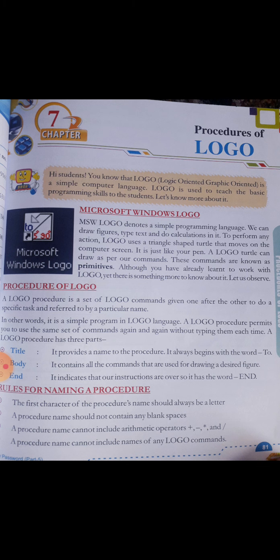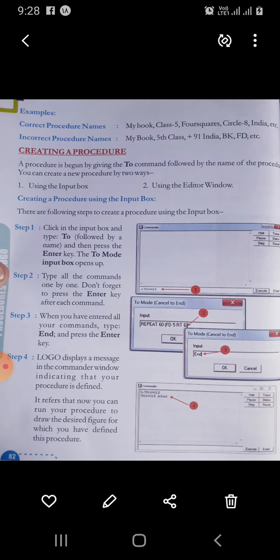Now let us come to page number 82. Here are examples: correct procedure names are — mybook, class-5, foursquares, circle-8, india, etc. Incorrect procedure names are — mybook5thclass, +91, india, bk, fd, etc. These are all incorrect procedure names.